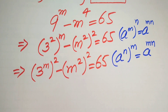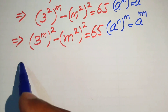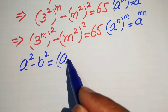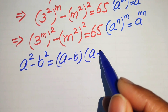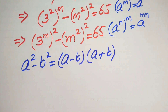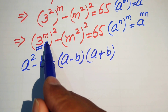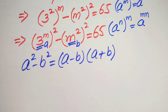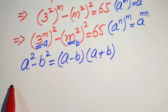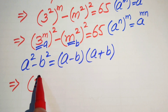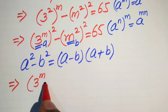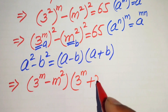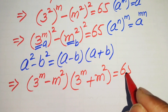Now we use the algebraic formula for difference of squares: a squared minus b squared equals a minus b times a plus b. Here, 3 to the power of m is our a and m squared is our b. Applying this formula, the equation becomes 3 to the power of m minus m squared, times 3 to the power of m plus m squared, equals 65.